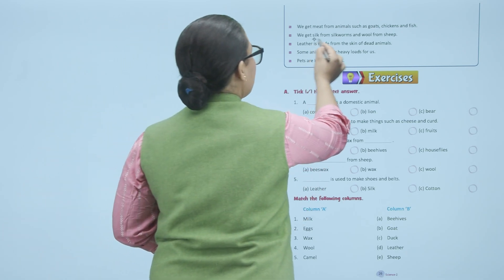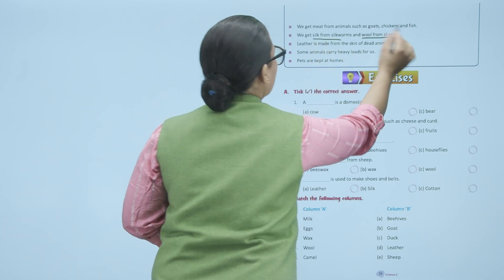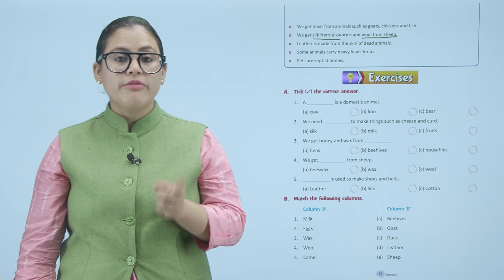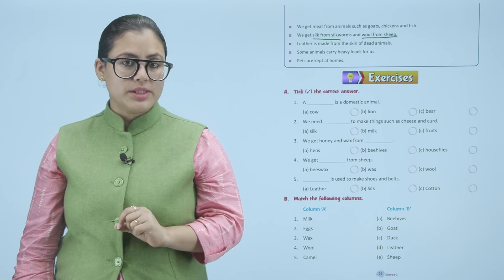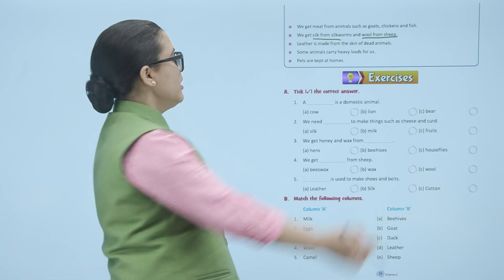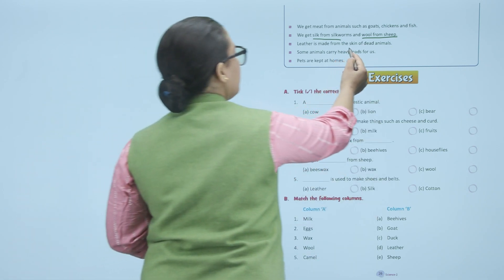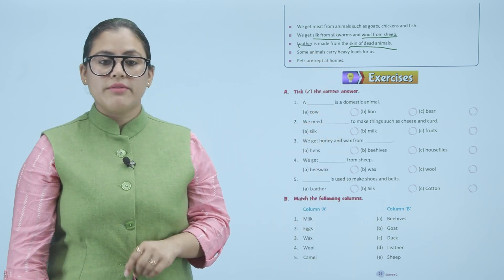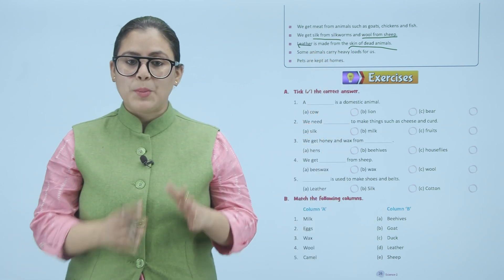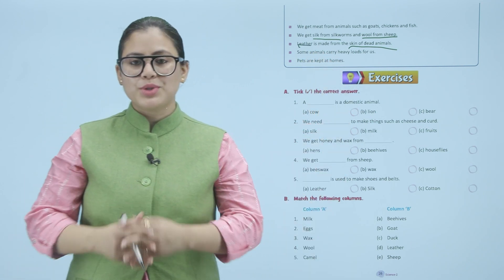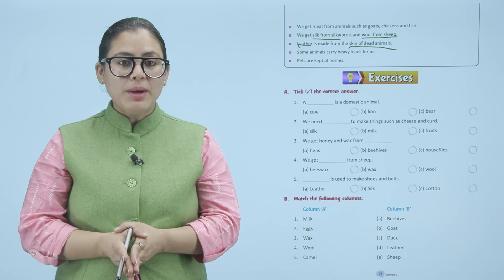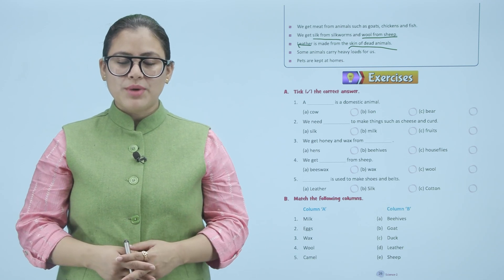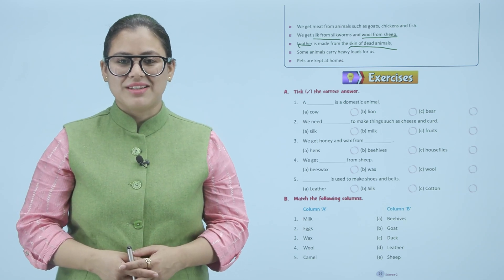Leather is made from the skin of dead animals. Some animals carry heavy loads for us. Pets are kept at homes. Children, I hope you understand this chapter — now practice it yourself. Thank you.